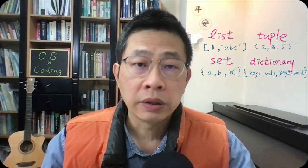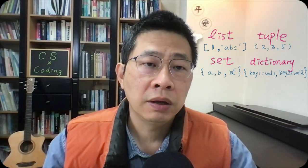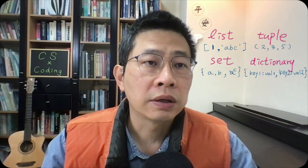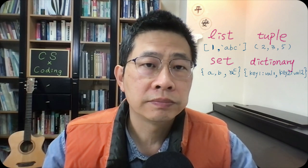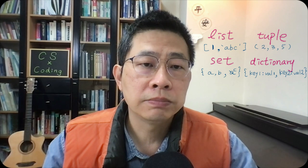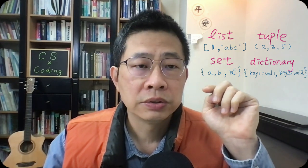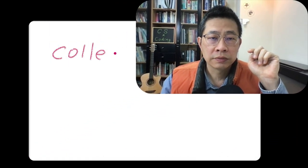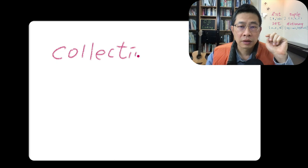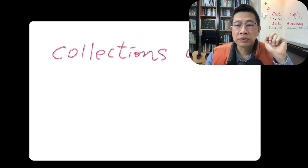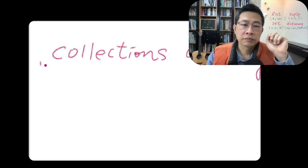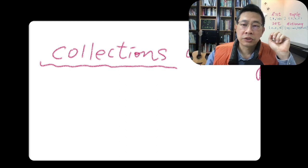So the idea in Python, we call it collection of the data type. Most important, actually there are four kinds of this, we call it collections. Collections of things.